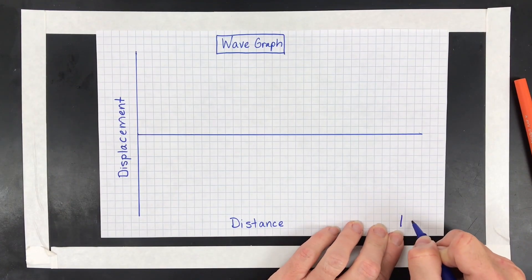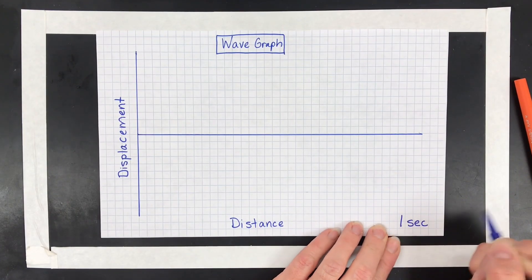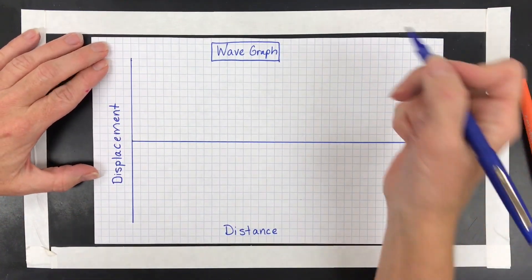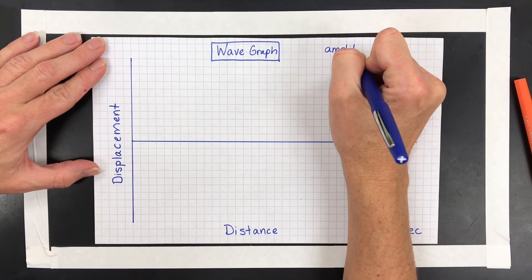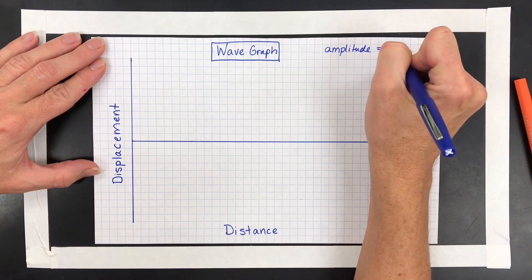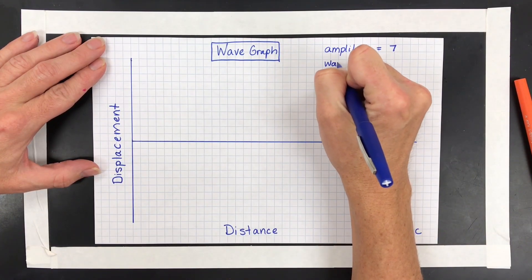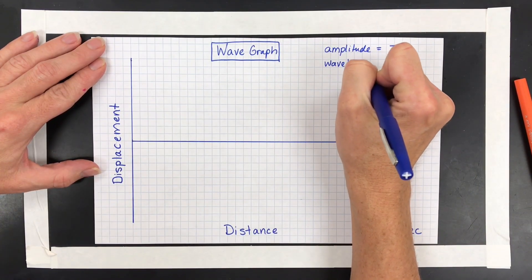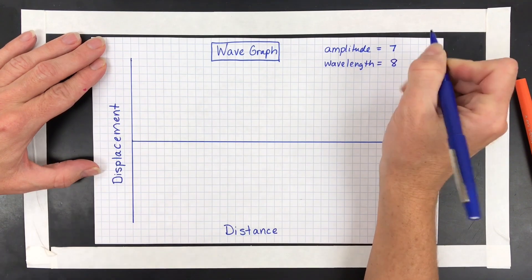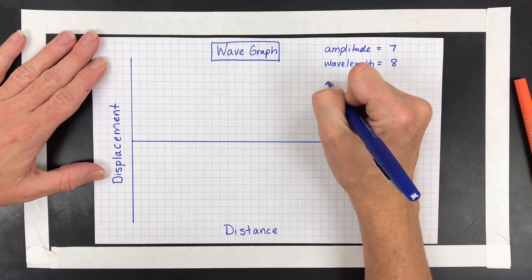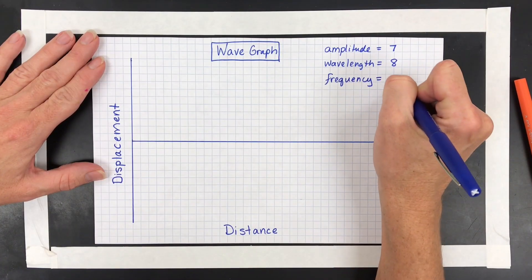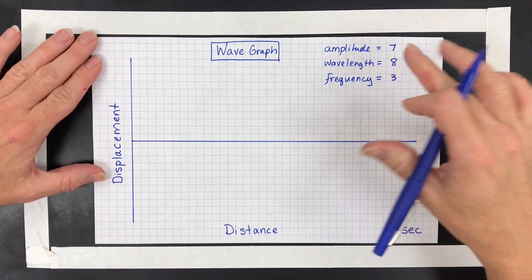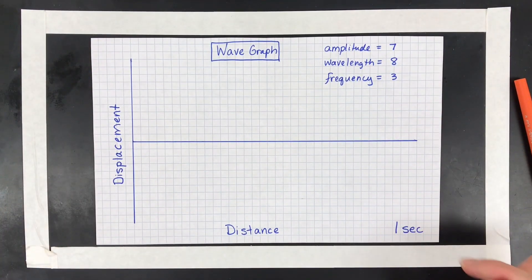And then I'm just going to say that this happens all in one second. I'm just going to pick some arbitrary numbers. I'm going to make my amplitude 7. I'm going to make the wavelength 8, nice even number. That will help us graph it easier. And then let's just make it a frequency of 3. That means I'm going to have 3 cycles of this wave in one second.